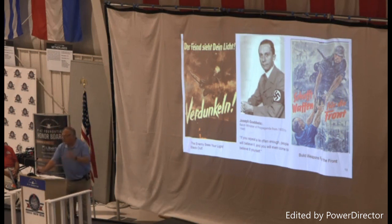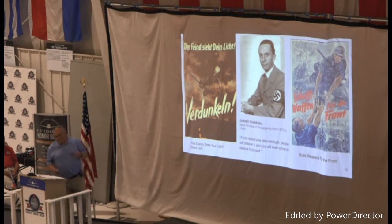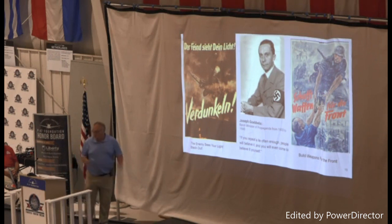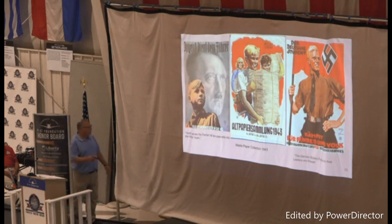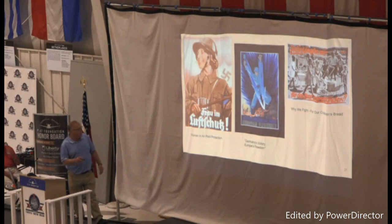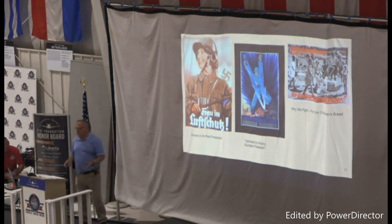German propaganda focused on the same themes as others: industry, youth, rationing, food and war production, joining the military, being patriotic — using posters, movies, newspapers, and books. One poster says 'The enemy sees your light' — blackouts, a common theme. Another: 'Build weapons for the front.' Three posters encouraged youth to participate: 'Youth serves the Führer,' 'All 10-year-olds into the Hitler Youth,' 'Wastepaper collection — German students fighting for their leaders and their people.' There were also posters for women in airway protection, 'Victory for Germany is freedom for Europe,' and 'Why we fight — for our children's bread' — playing on emotions and patriotism.